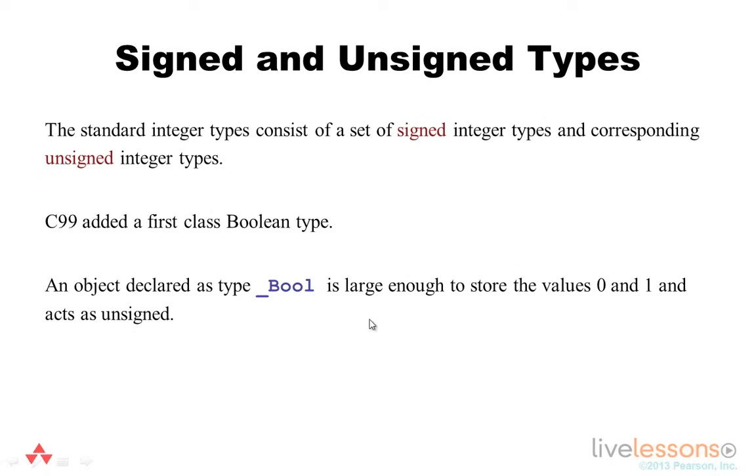The standard integer types consist of a set of signed integer types and corresponding unsigned integer types. The C99 standard also introduced a first-class Boolean type. An object declared as type bool is large enough to store the values 0 and 1 and acts as an unsigned value. This is an exception to this rule because there is no corresponding signed Boolean type.